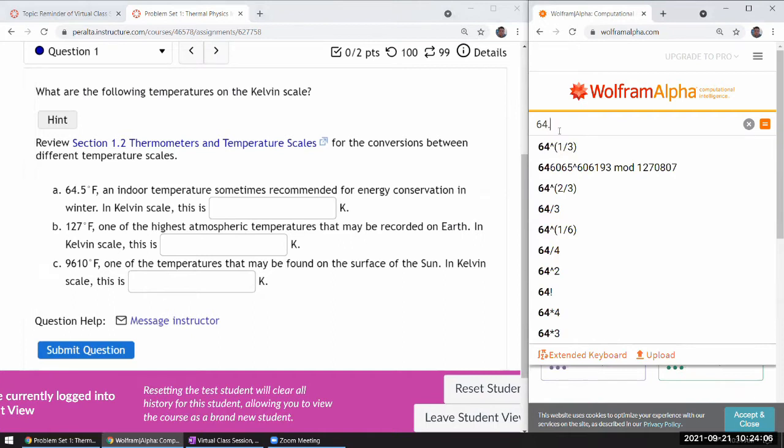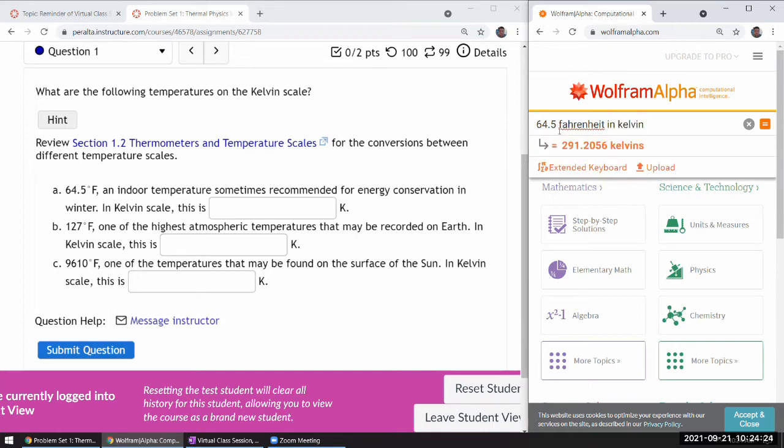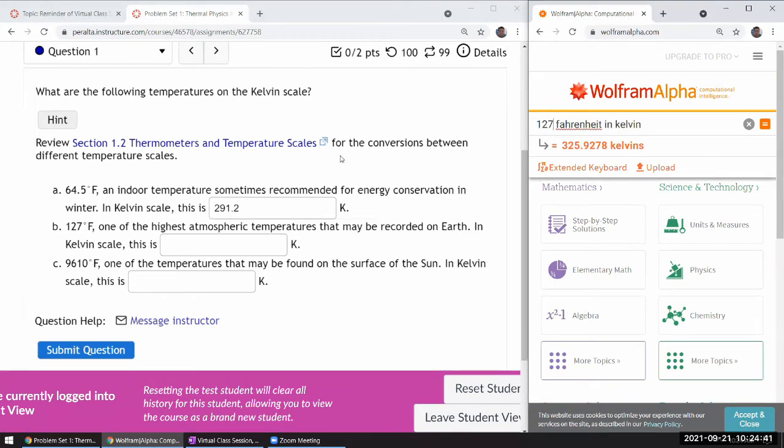So if you ask what is 64.5 Fahrenheit... Oh, can I spell Fahrenheit? Fahrenheit. I think there's an H in here somewhere. Fahrenheit. Fahrenheit in Kelvin. Wolfram Alpha has some natural language processing. They can also work through whatever typos I have. 291.2. And then 127 Fahrenheit in Kelvin.